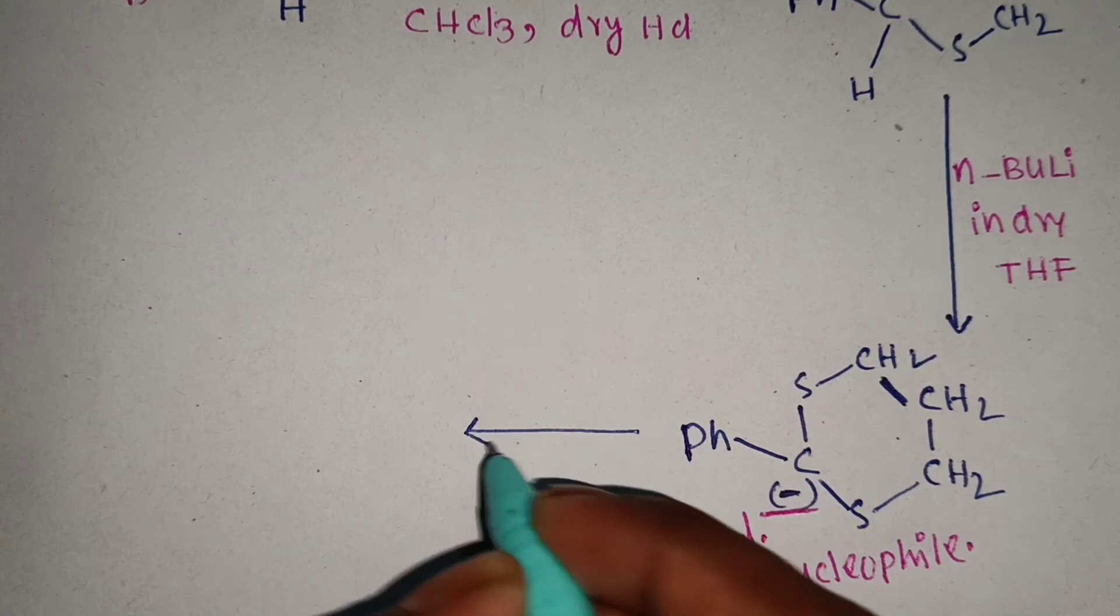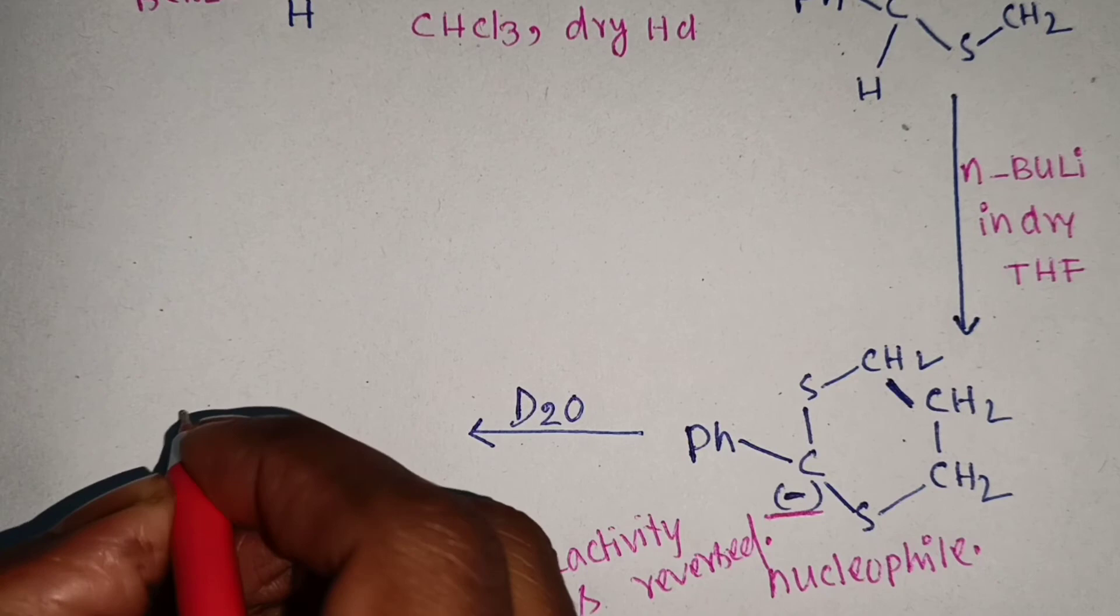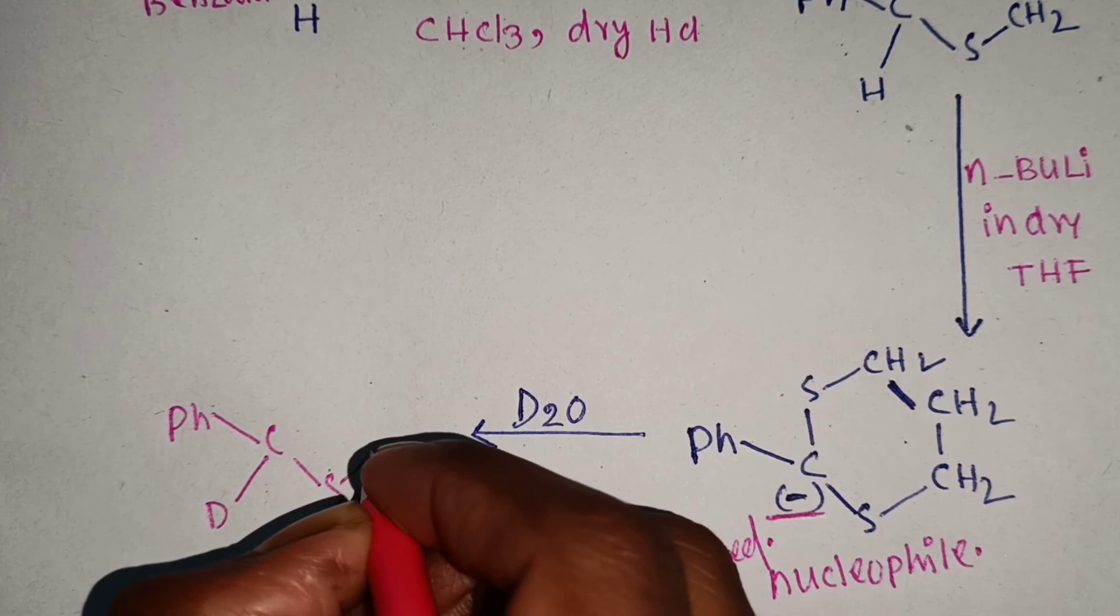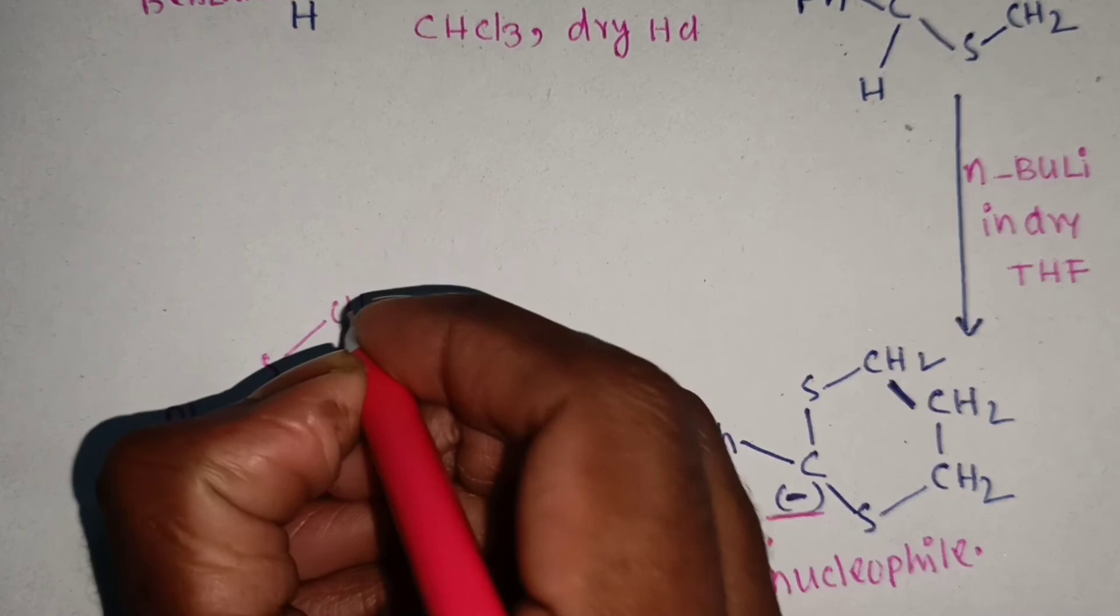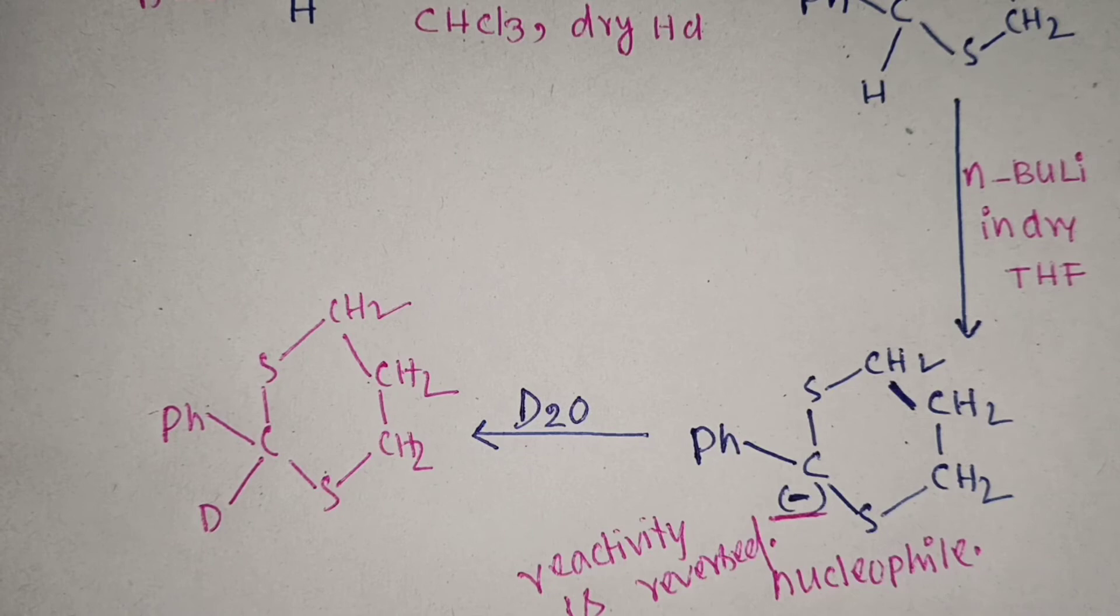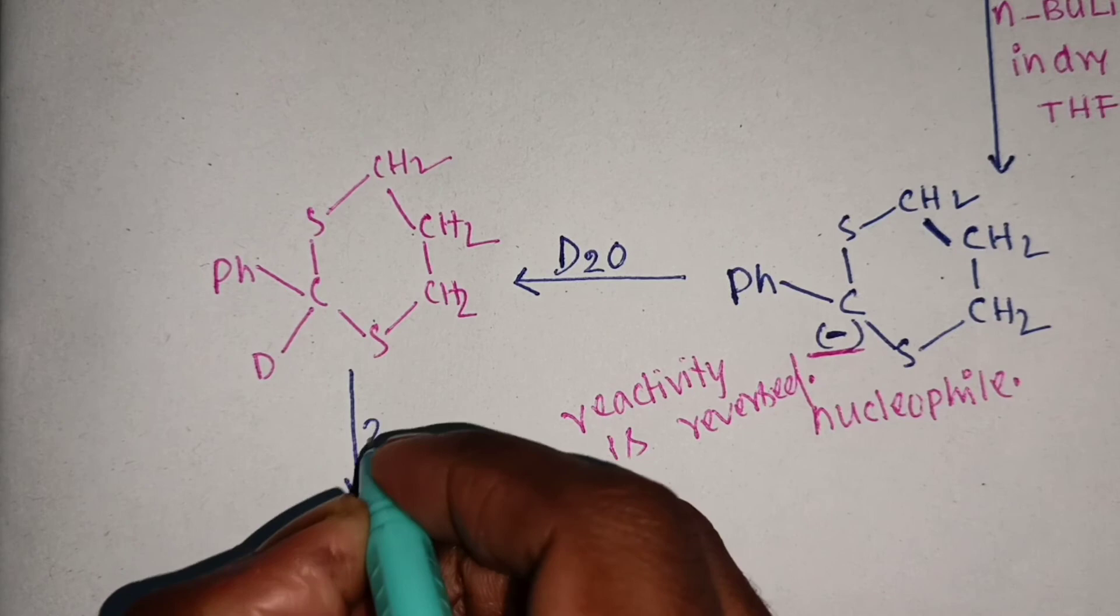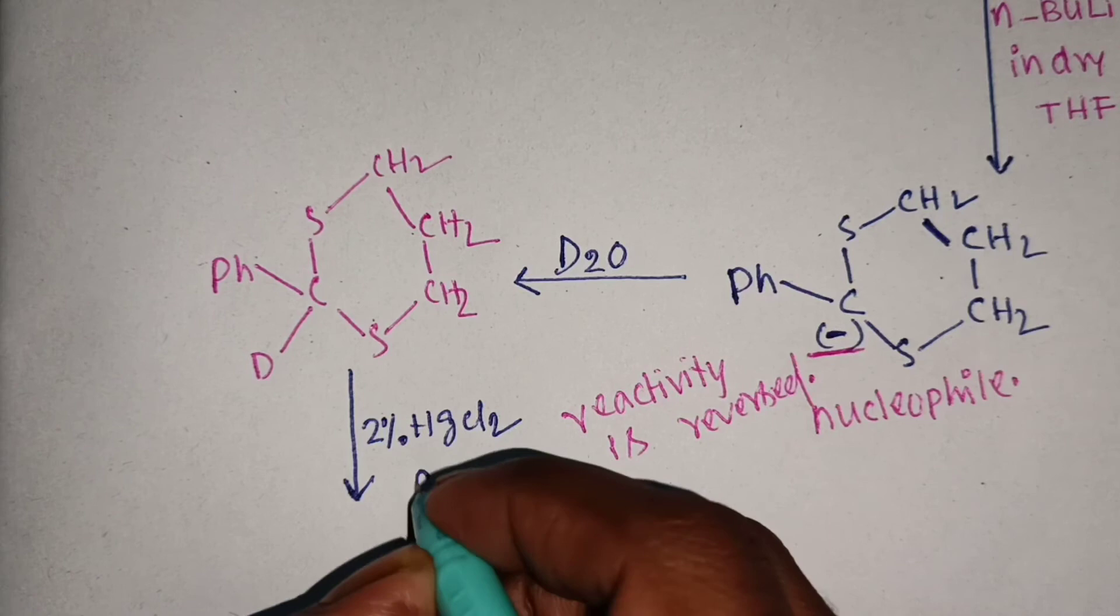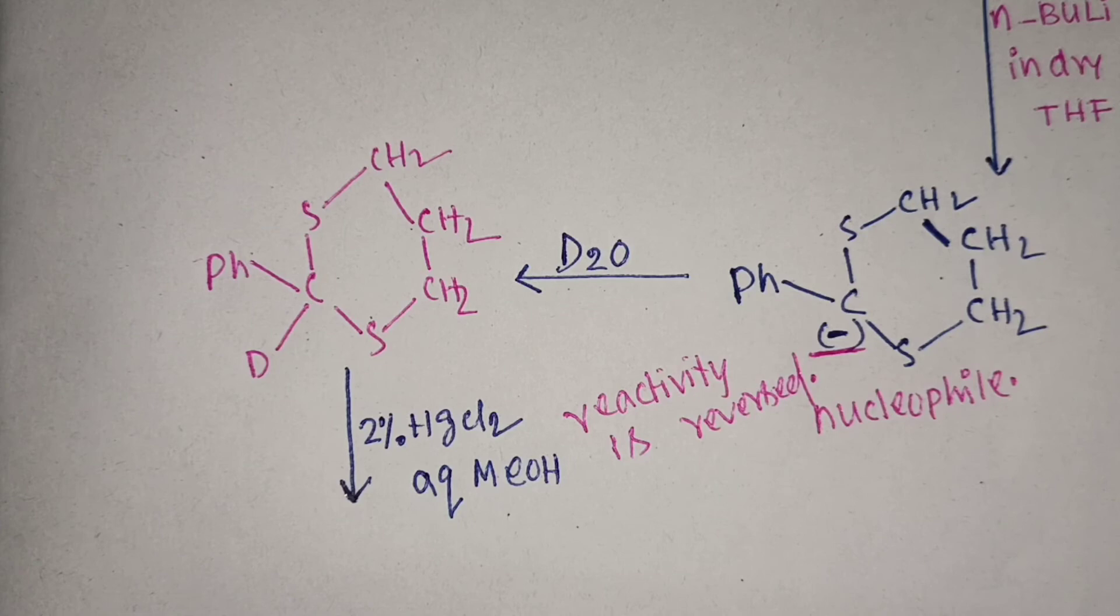Again, this is treated with D2O, and we will get the product. Again if it is treated with 2% HgCl2 with aqueous methanol, we will get the final product.